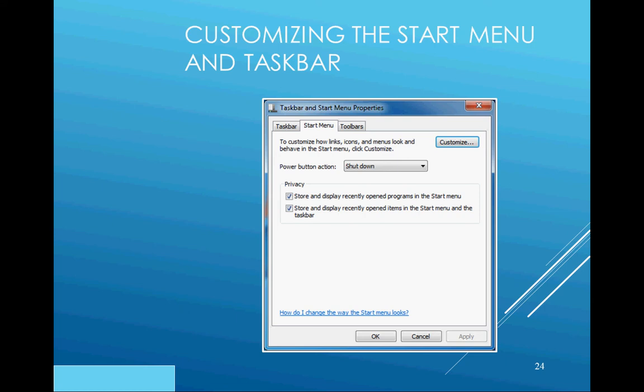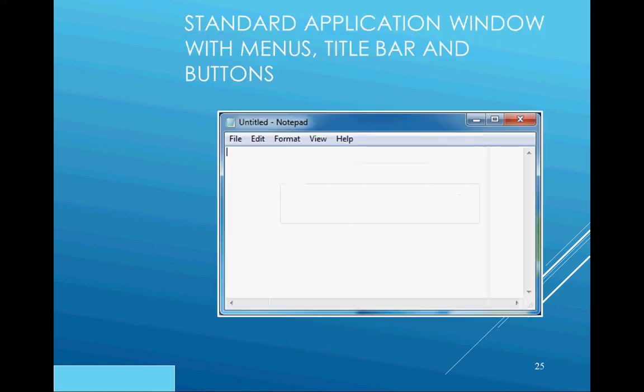Looking at standard applications within Windows, at the top is the title bar — this one is called 'Untitled - Notepad.' To the right of that, you see the underline button which minimizes, a box which maximizes, and a red X which closes the application. There are File, Edit, Format, View, and Help menu options with submenus. Most applications in Windows 7 share this common look and feel.